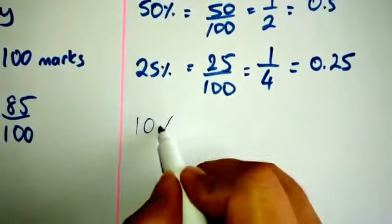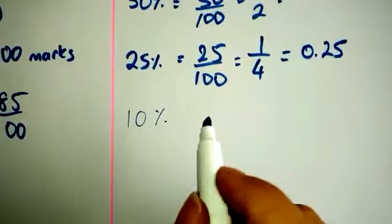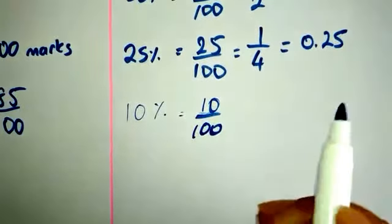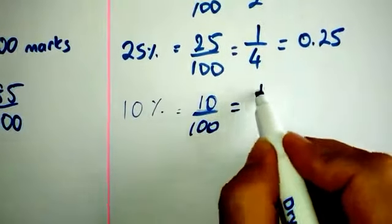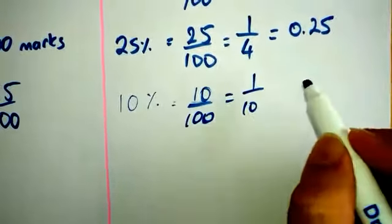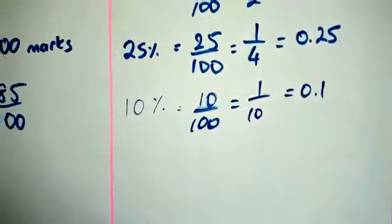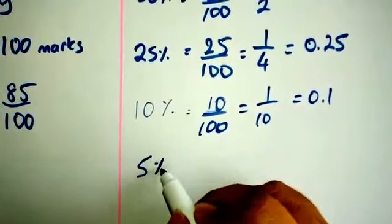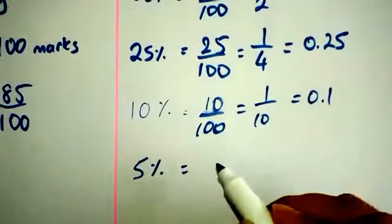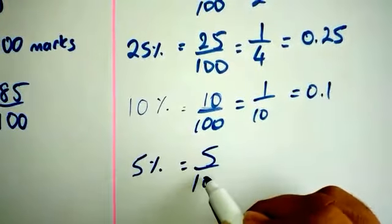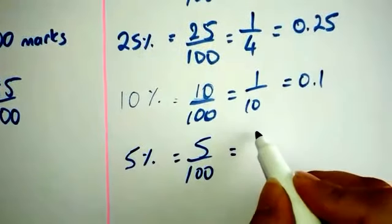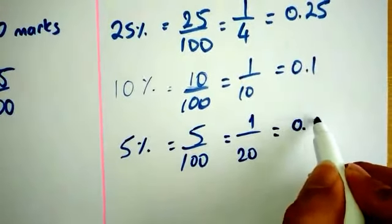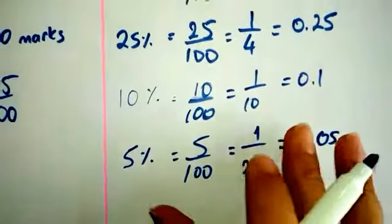10% - we can write 10% as 10 out of 100, which is one tenth. So 5% can be written as 5 out of 100, and 0.05 in decimal numbers.